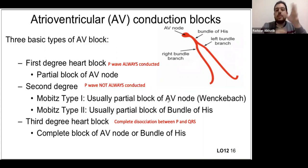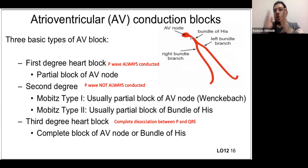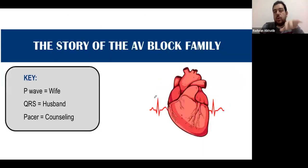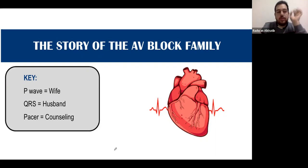A famous teaching story uses the P wave as the wife and the QRS as the husband. In normal sinus rhythm, the husband comes home on time every night. To understand the block types, there's a very helpful family story: the P wave is the wife waiting at home, the QRS is the husband, and the pacemaker we insert represents the counselor resolving the family crisis.